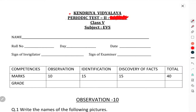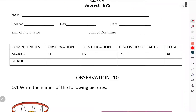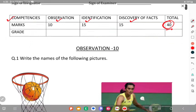Today we will discuss the Periodic Test 2, Kendriya Vidyalaya, class 5th, subject areas. We have to start with the competencies: observation 10 marks, identification 15 marks, discovery of facts 15 marks. You have to do the question paper of 40 marks.